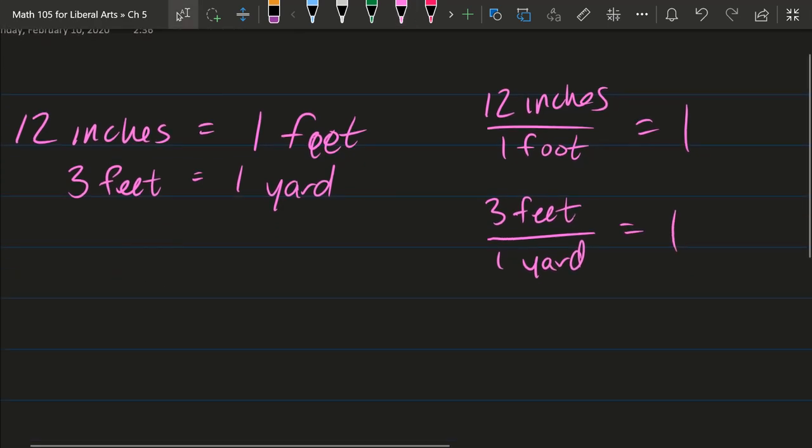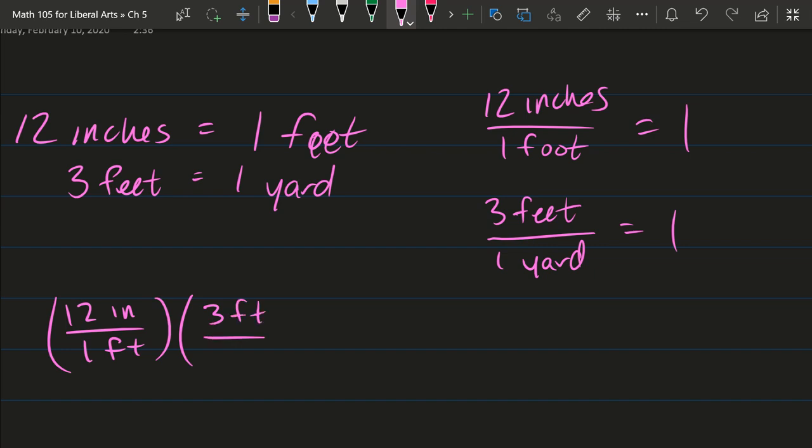So if I want to go all the way from inches to yards I multiply these together. So we have 12 inches divided by one foot times 3 feet divided by one yard, and I get to cancel the feet because we have feet divided by feet. They cancel and you multiply fractions multiply across the top then the bottom.